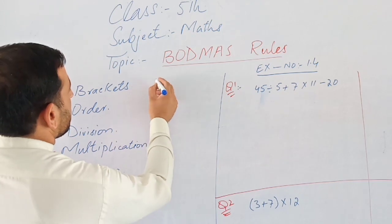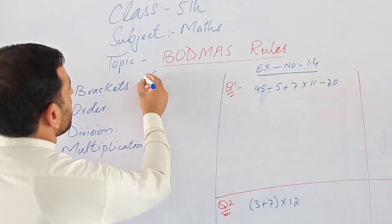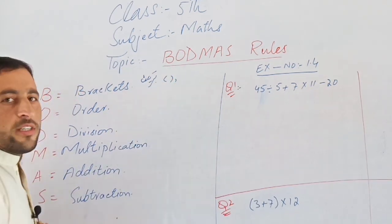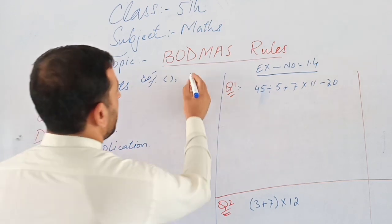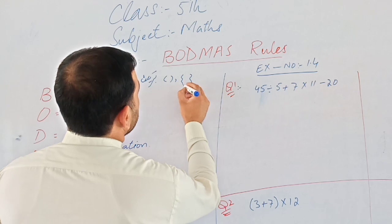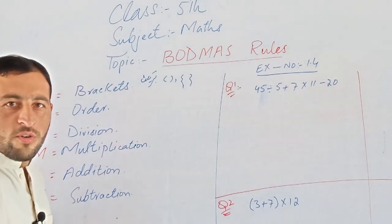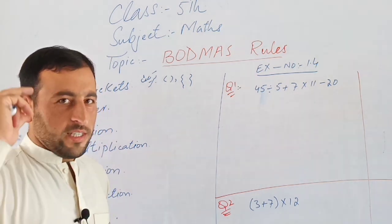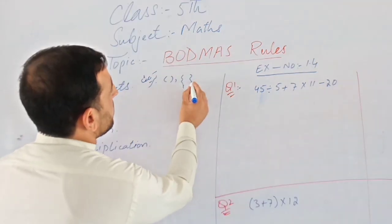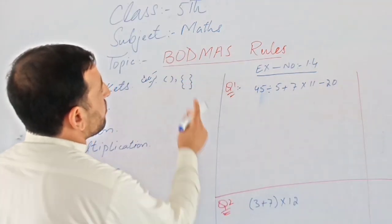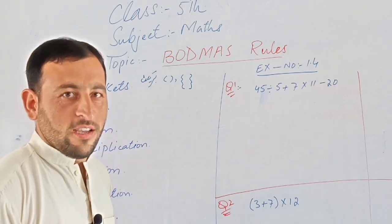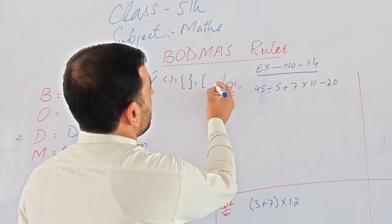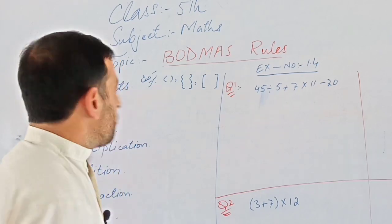The first type is parentheses — these are the round brackets. The second type is braces — these are done with curly braces.